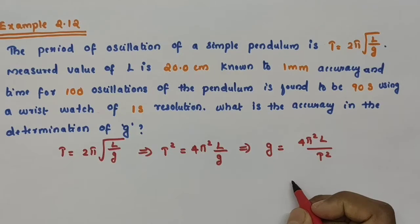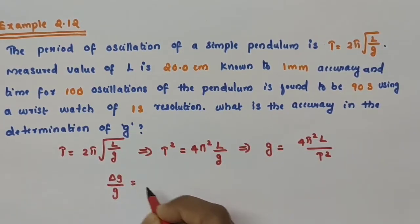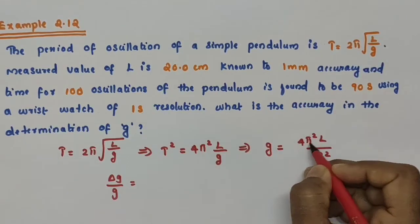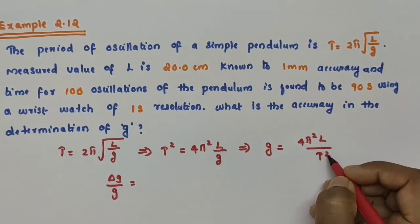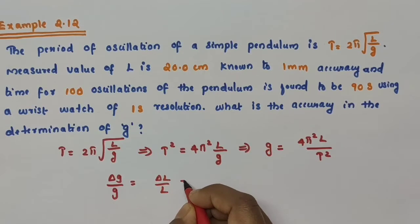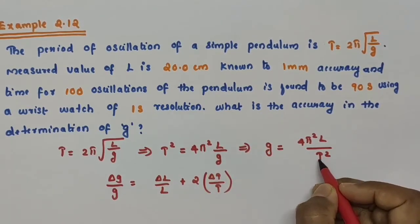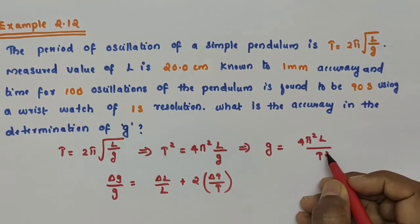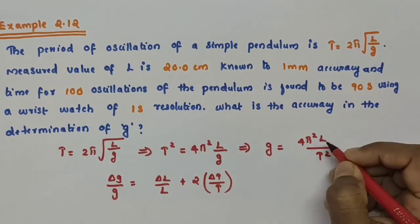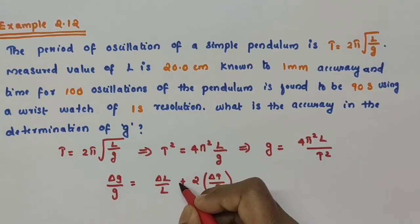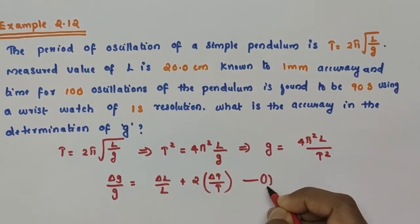Now, what about the relative error in the measurement of g? That is δg/g. We have L divided by T², so for the division of two quantities: δg/g = δl/L + 2·(δT/T). Here T is raised to the power 2, so that power multiplies the relative error. We are taking this as equation number 1.